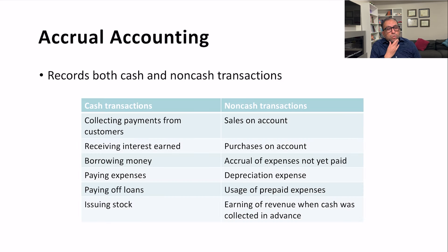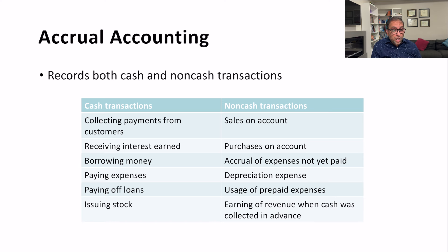Accrual accounting records both cash and non-cash transactions. Some transactions involve cash and some do not. A cash transaction is one in which cash is either debited or credited — that is, cash is one of the accounts affected. Any transaction in which neither a debit nor a credit affects cash is called a non-cash transaction.